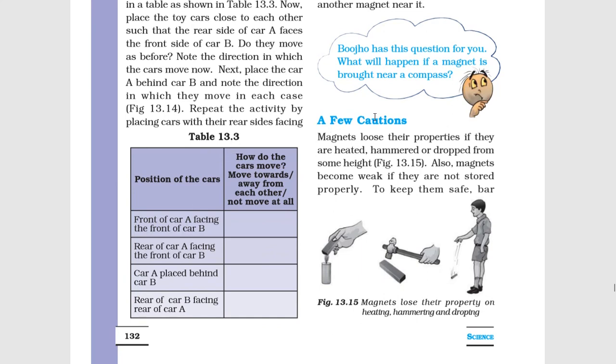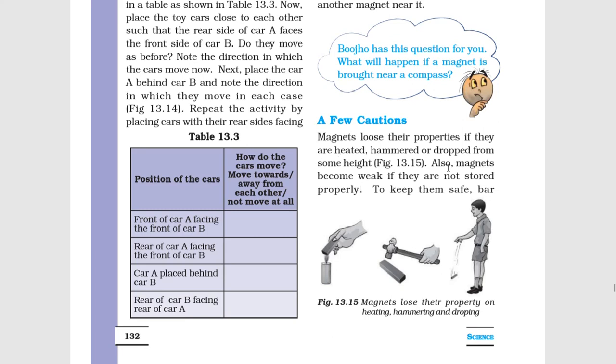A few cautions: Magnets lose their properties if they are heated, hammered, or dropped from some height. Figure 13.15 - inko heat nahi lagna chahiye, hathode se nahi peetna hai, aur ucchai se nahi phekna hai. Also, magnets become weak if they are not stored properly.